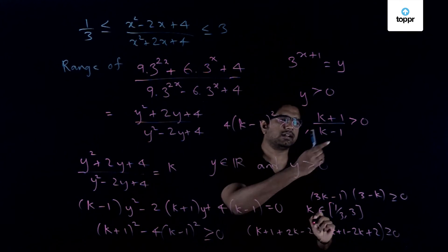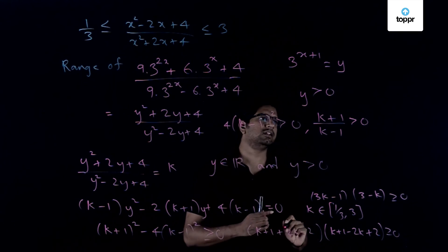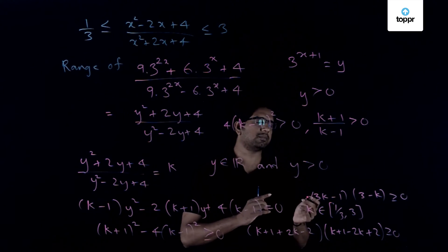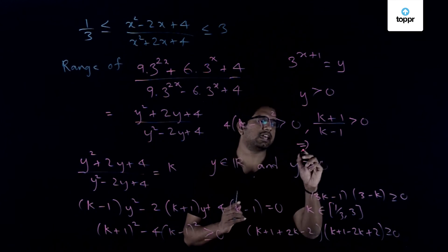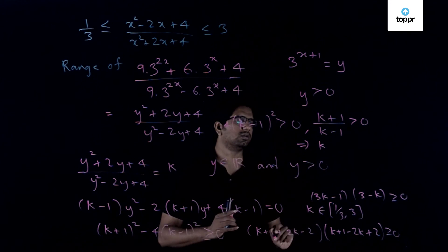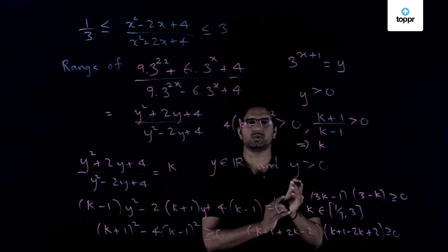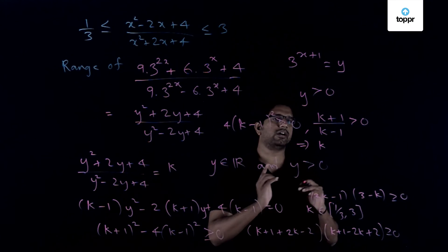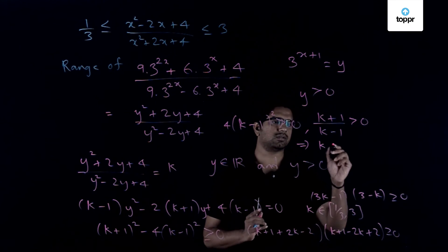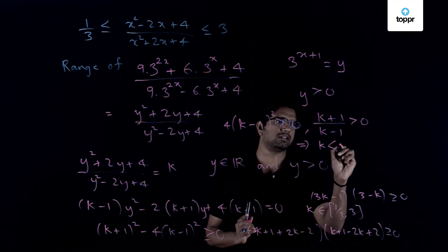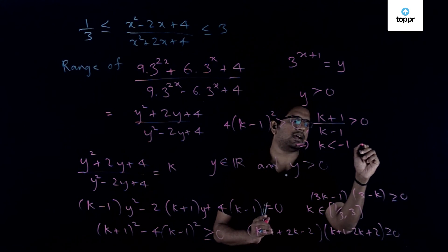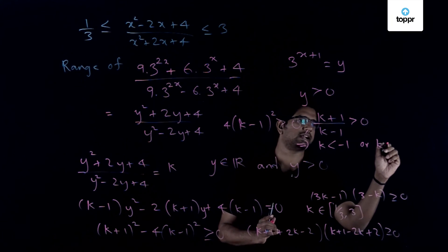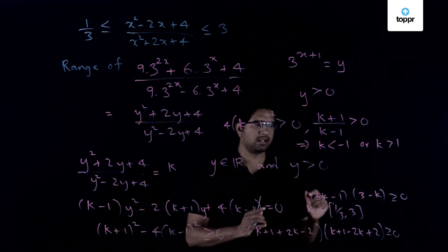So what does one get by putting this constraint? So we get that (k + 1) times (k - 1) should be greater than 0 which implies that k should be, so this k either should be less than -1 or it should be greater than +1. So either k should be less than -1 or k should be greater than +1.